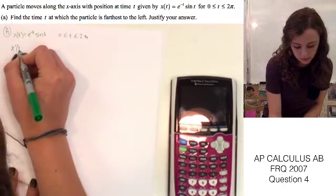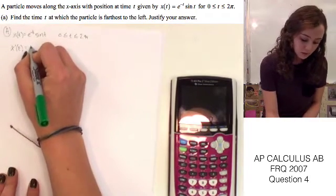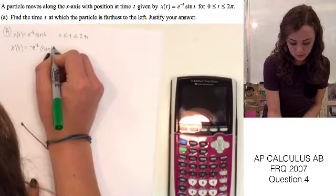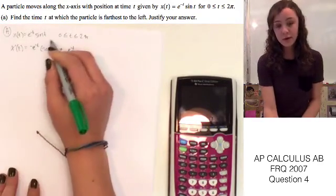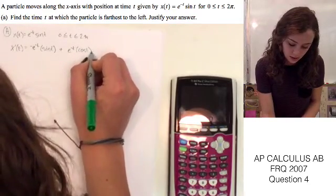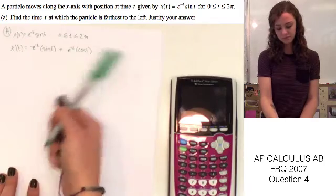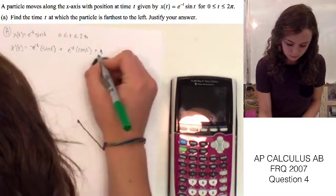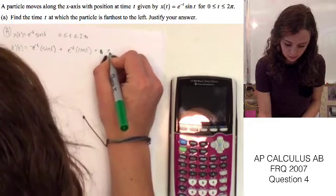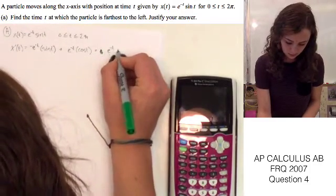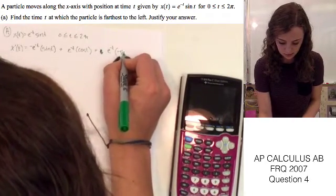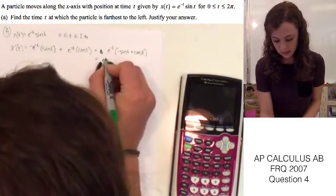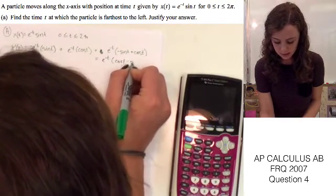We're going to have to use the product rule. So we'll find the derivative of e to the negative t, which is negative e to the negative t, and multiply it by sine t. Plus e to the negative t times the derivative of sine t, which is cosine t. Since both parts of this equation have e to the negative t, we can simplify this to e to the negative t times the quantity cosine t minus sine t.